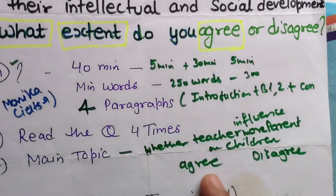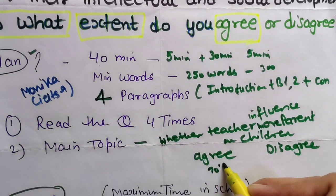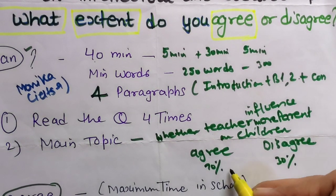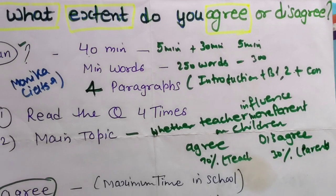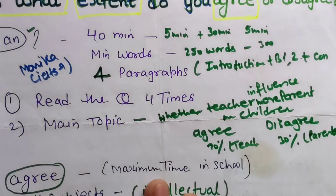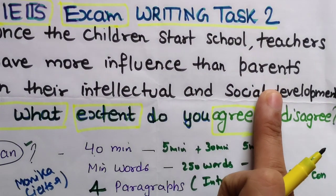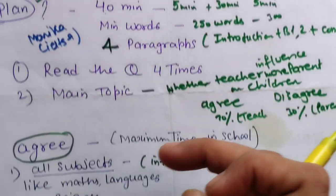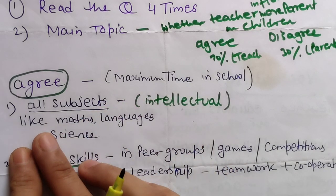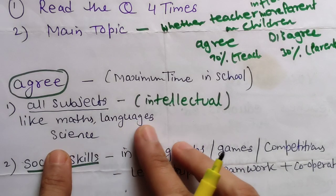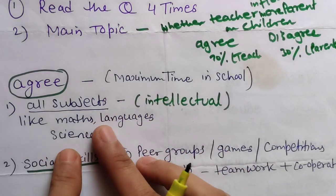I will agree up to a large extent — 70% about agreement for teachers, 30% about parents' importance. For the agreement points, we talk about these two areas. For intellectual skills, teachers are teaching subjects like math, science, and language — teachers are specialists in those subjects, so parents can't teach all these things. This relates to academics.